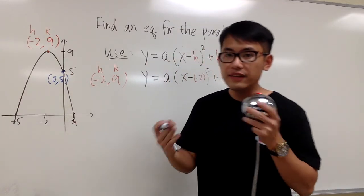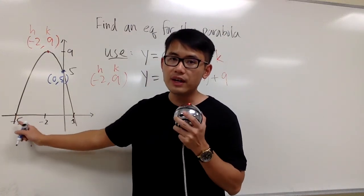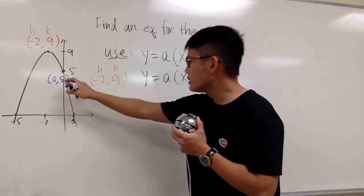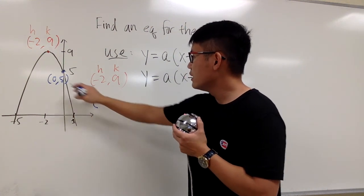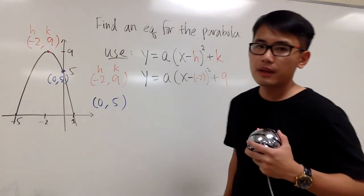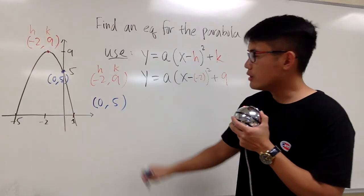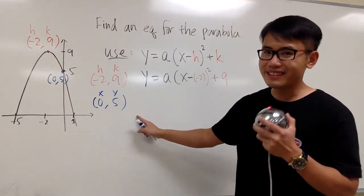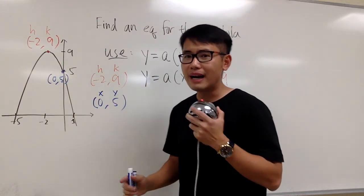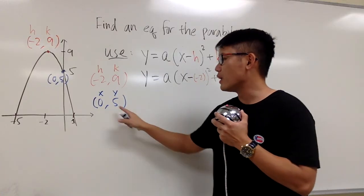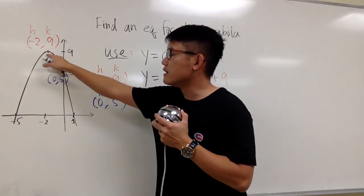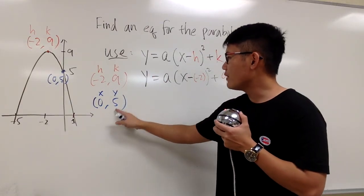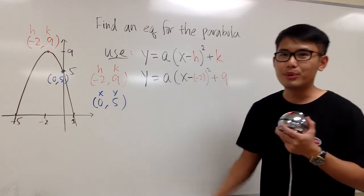I'm just going to use this point. If you would like, you can use this point which is negative 5, 0. We can also use this point, 1, 0. Up to you. But I'm going to use this point — I'll write it down right here. It is 0, 5. This is a point on the parabola, and we know the first coordinate is the x value, and this one is the y value. This is the y-intercept. So x and y — earlier this point was the vertex, it's special, it's h, k. Now all we have to do is plug the y value in here and the x value in here, and we should be able to solve for a.